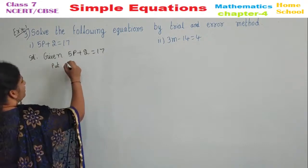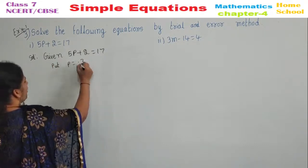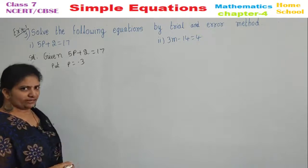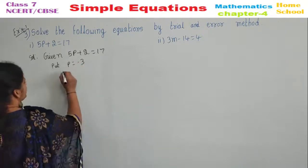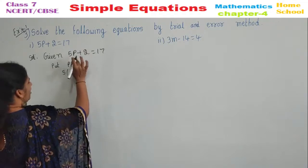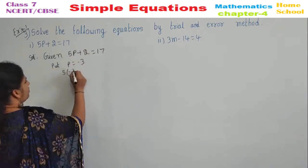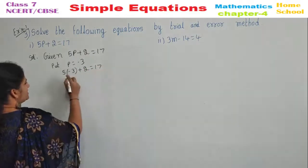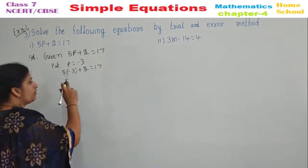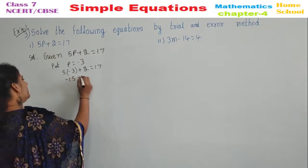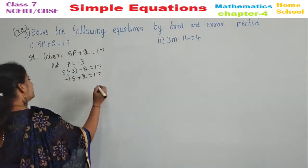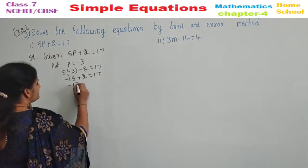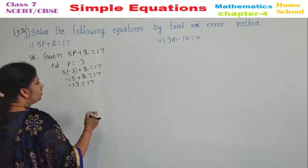Put P is equal to minus 3. Let's guess any number. You can guess minus 3. Substitute in this. 5 wherever you have P, substitute this value. 5 into minus 3 plus 2 equal to 17. Plus into minus is minus. 5, 3 is 15 plus 2 is equal to 17. Minus 15 plus 2 will be minus 13 equal to 17.